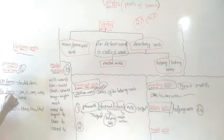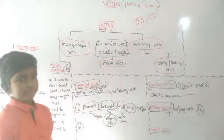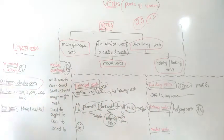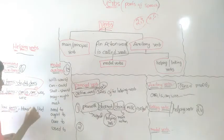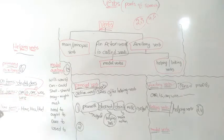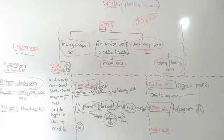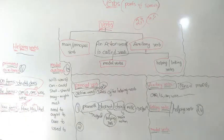In Do forms: do, did, does. In Be forms: am, is, are — used in present tense — and was, were — used in past tense. So Be forms are: am, is, are, was, were. In Have forms: have — used for plural — and has — used for singular. So Have forms are: have and has.